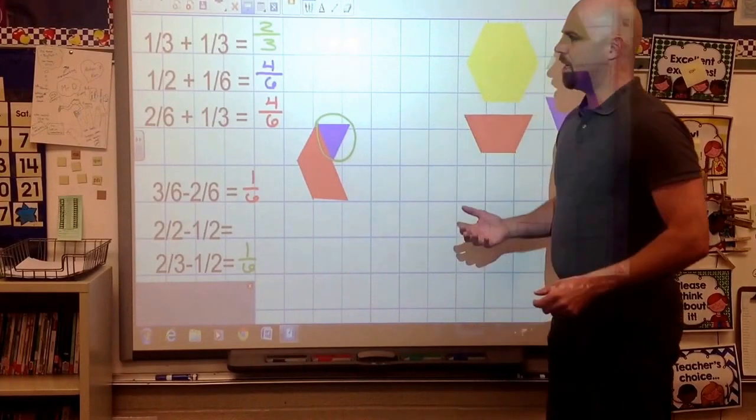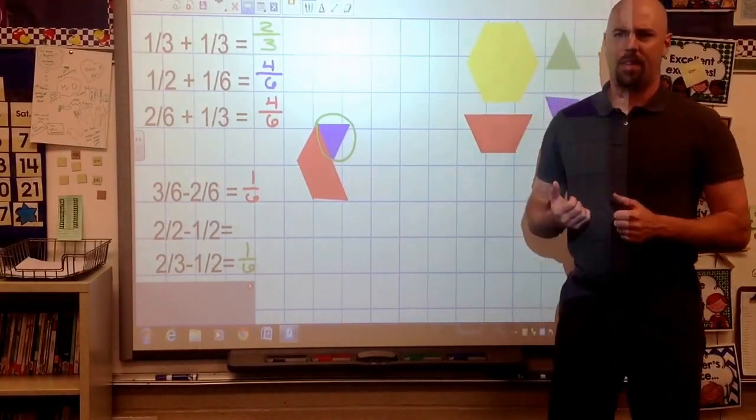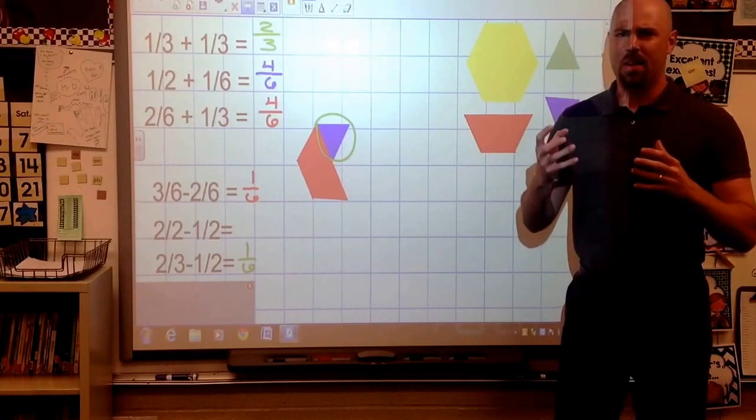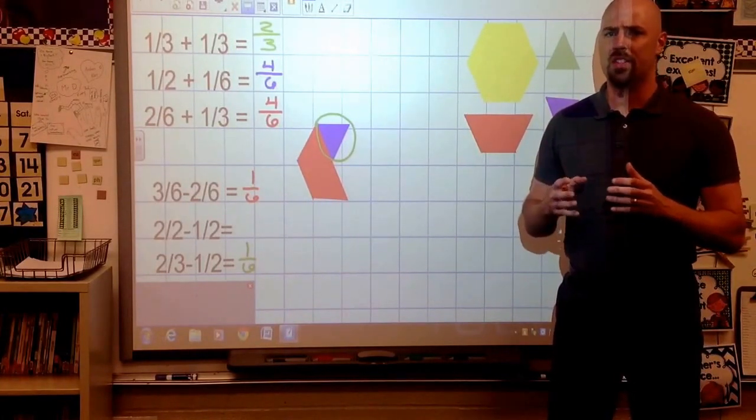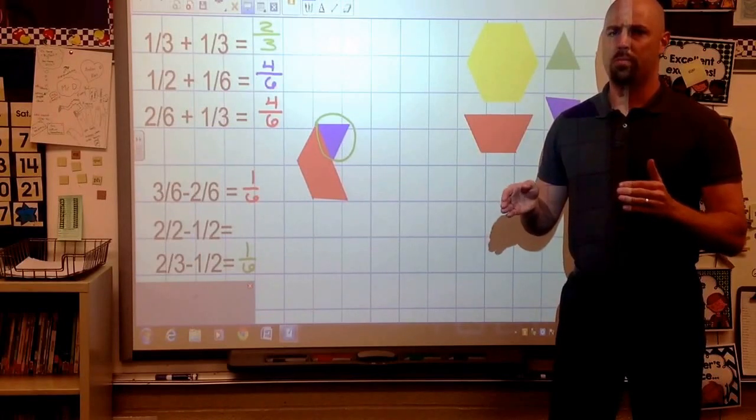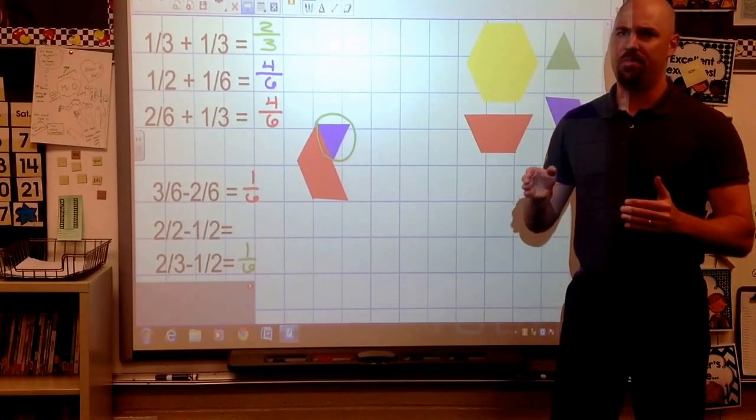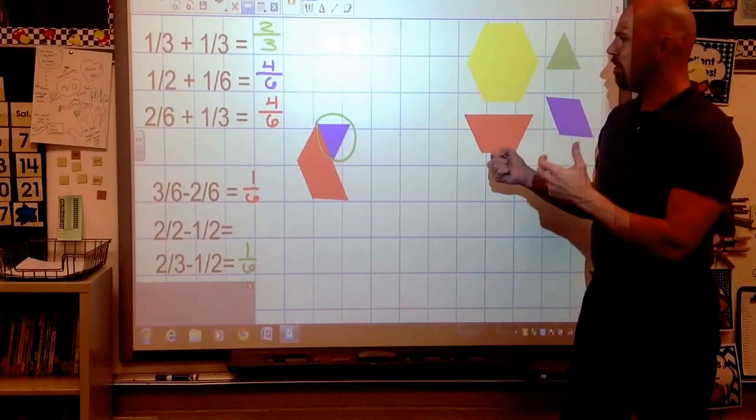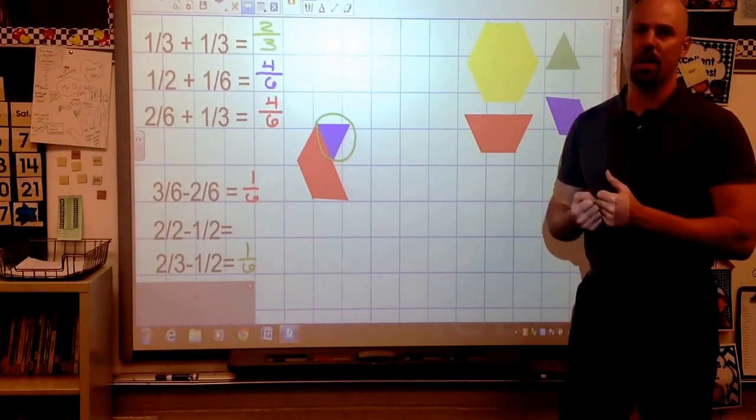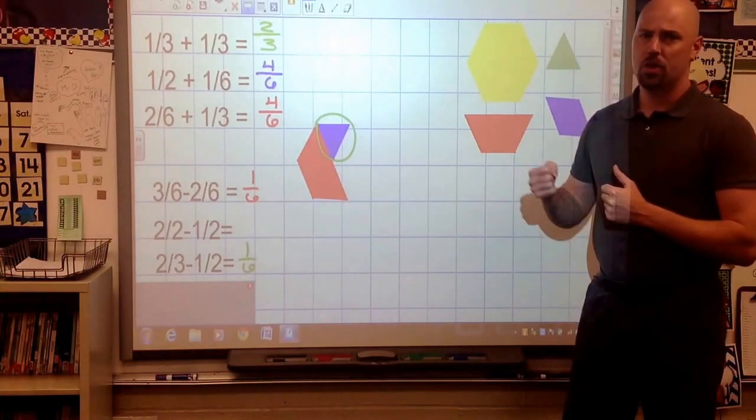So like we said at the beginning of the lesson, I don't expect them to use pattern blocks all the time. This is just for some conceptual understanding. It helps us while we're at the beginning of this. Eventually, we move towards just using the math and figuring out how to make common denominators, simplifying fractions, those types of things. But here is the beginning of adding fractions with like and unlike denominators using the pattern blocks. This is the magic here.